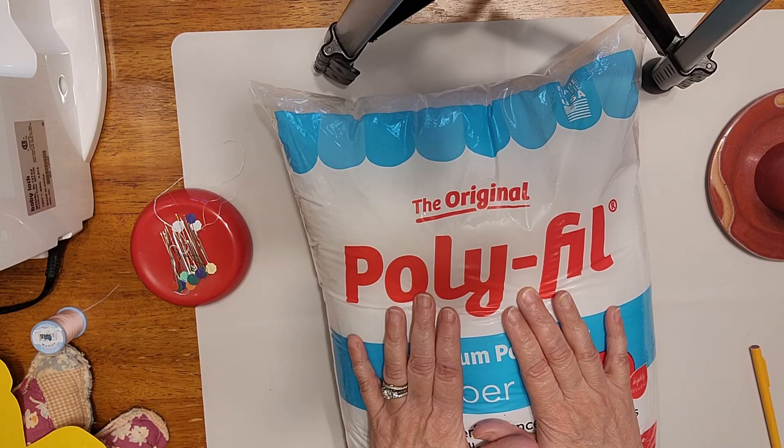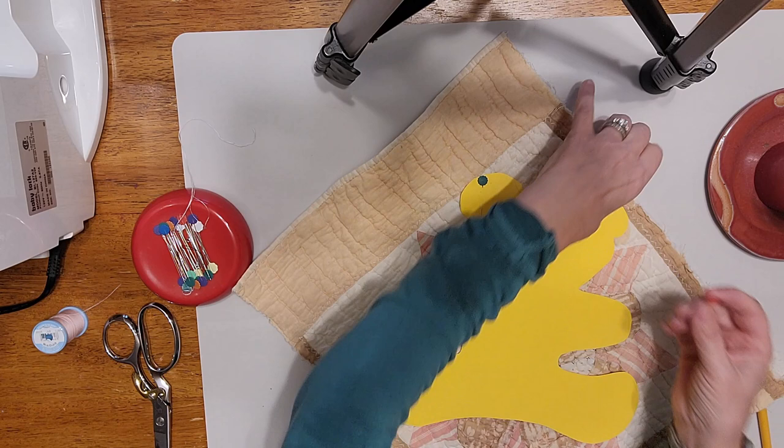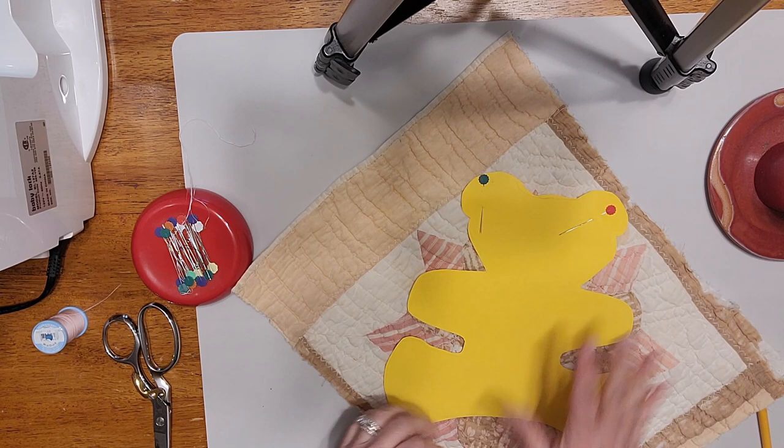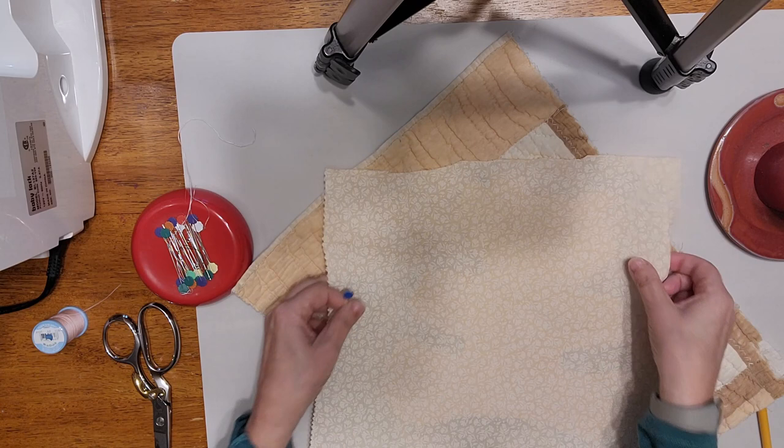I'm just going to pin him down. This is just to keep this little guy stabilized while I cut around him. Then we are going to do this process on both this quilt piece, and then I'm going to do it again using this piece of fabric.